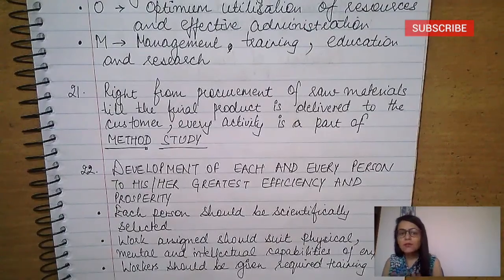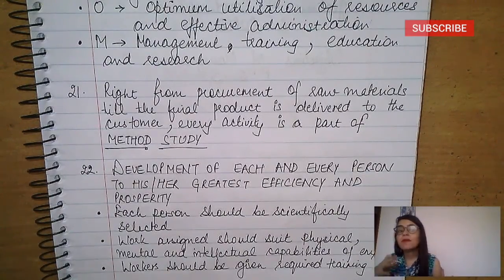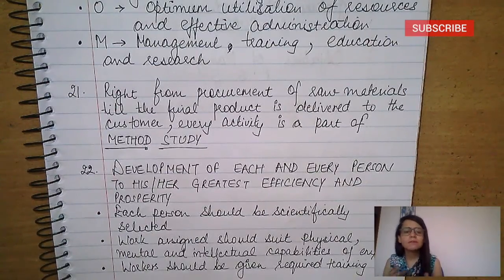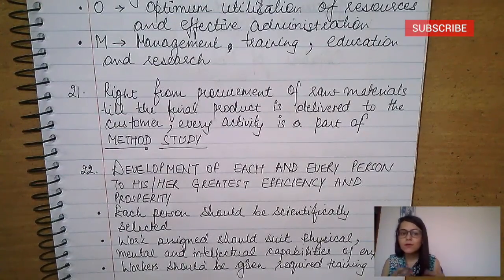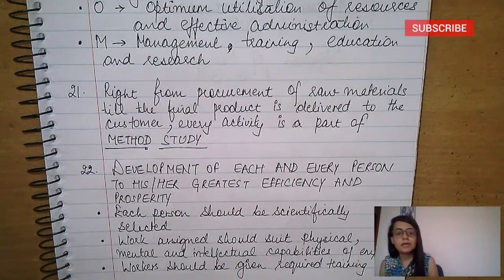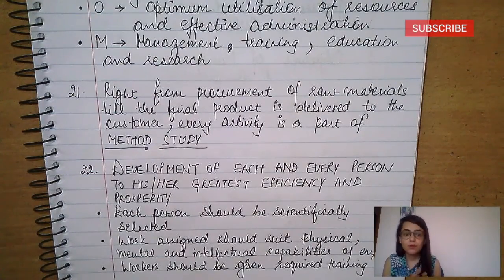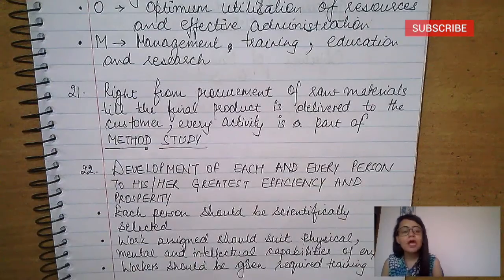Another major confusion is between science not rule of thumb (principle) and method study (technique). Kids get confused because both talk about one best method. One tip: if the question specifies principle or technique, that solves it. Science not rule of thumb is a principle; method study is a technique. Otherwise, go by specific lines.